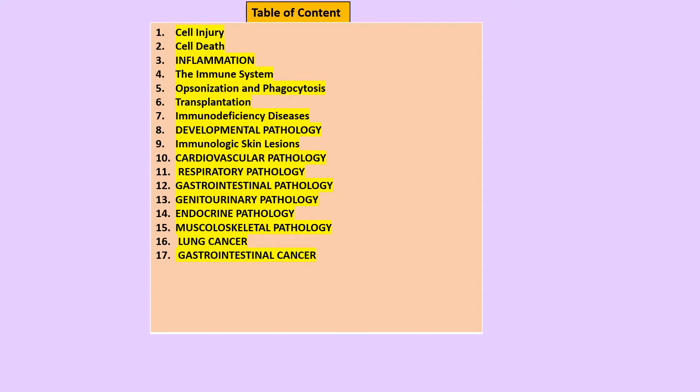In the table of contents, we can see the topics: cell injury, reactions to cell injury, pathologic calcification, cell death, inflammation, the mediators involved, wound repair, the immune system, cellular components of the immune system, opsonization, phagocytosis, blood typing, immunodeficiency diseases, developmental pathology, immunological skin lesions, cardiovascular, respiratory, gastrointestinal, genitourinary, endocrine, musculoskeletal pathologies, lung cancer, GI cancer, and neoplasia of the blood and lymphatic systems.